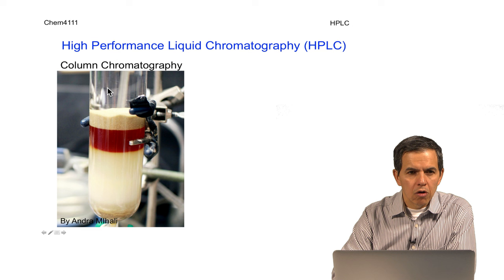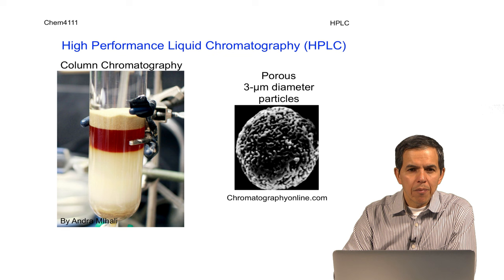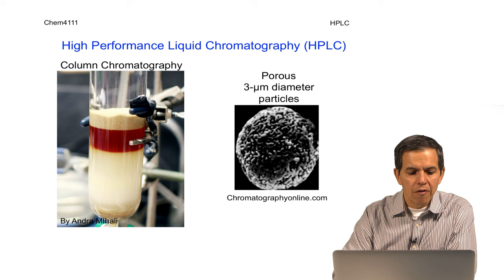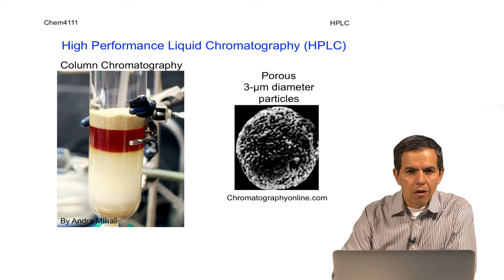However, in addition to column chromatography, the most popular way of doing chromatography nowadays is high-performance liquid chromatography, or HPLC, in which narrow columns are packed and filled with tiny, tiny porous particles, 3 micrometer or 5 micrometer in diameter. These particles function as the support for the stationary phase and allow the separation and analysis of different compounds.